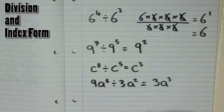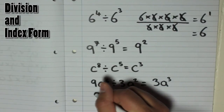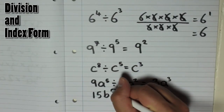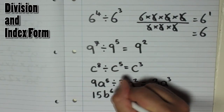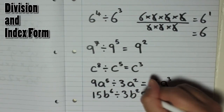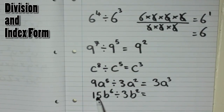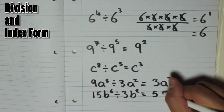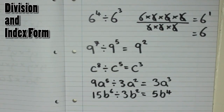Let's look at one more. Let's have 15b to the power of 6 and divide that by 3b to the power of 2. So the big numbers, you get 15 divided by 3 which is 5, and then b to the power of 6 divided by b squared, you do 6 take away 2 which is 4, so you get b to the power of 4. So that's when you divide indices, or numbers in index form.